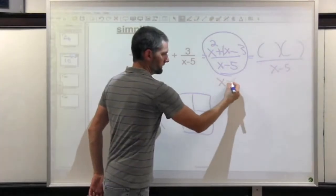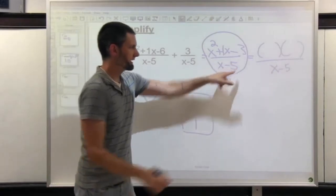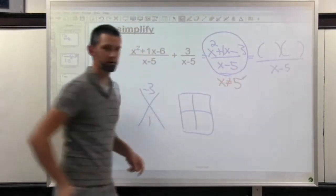One other idea. What is the restriction? What can x not equal? Well, 5 would make the bottom 0, so x cannot equal 5.